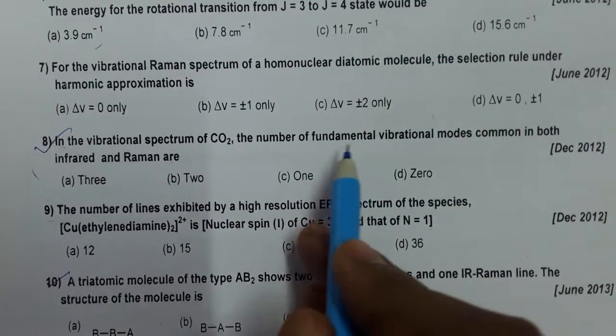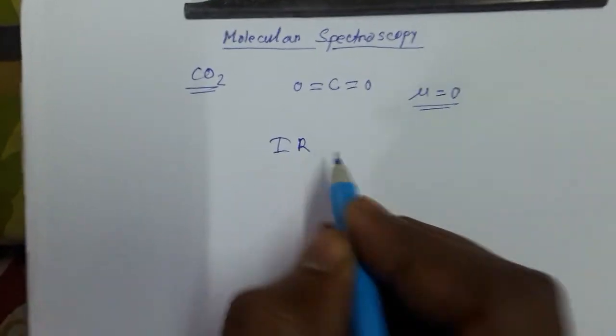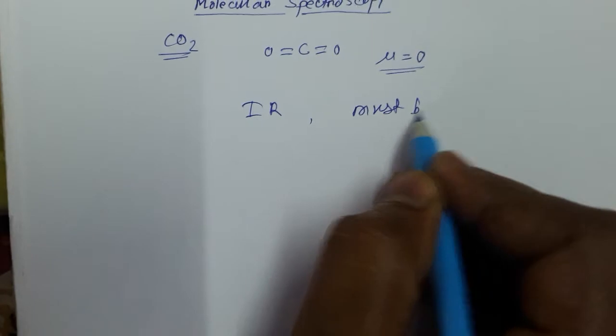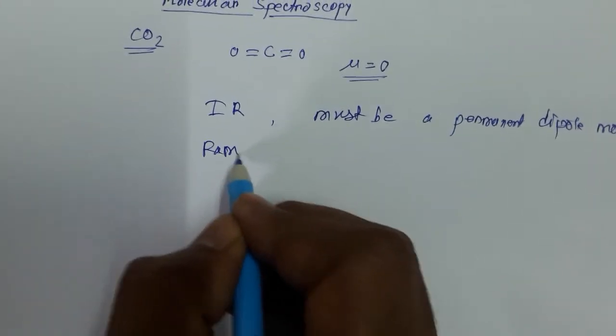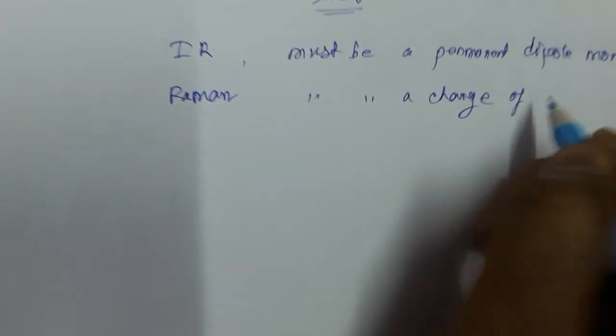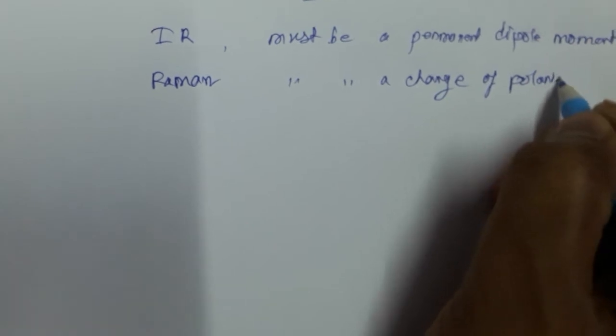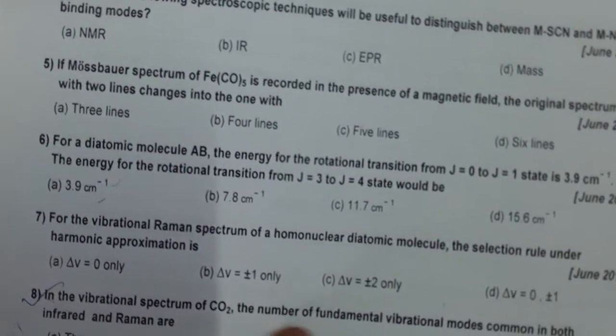Consider the question: in the vibration spectrum of CO2, what is the number of fundamental vibration modes common in both infrared and Raman? For IR spectra, there must be a permanent dipole moment, and for Raman there must be a change of polarizability.